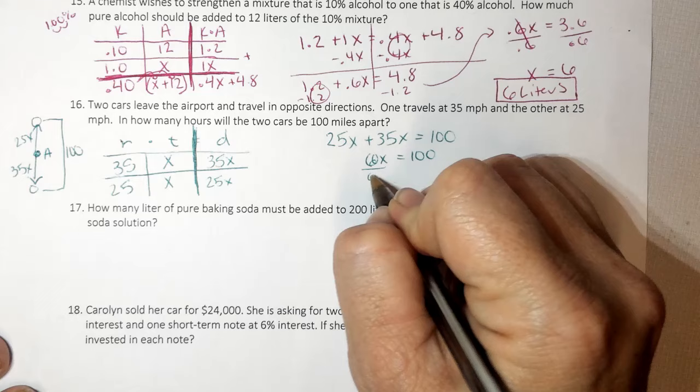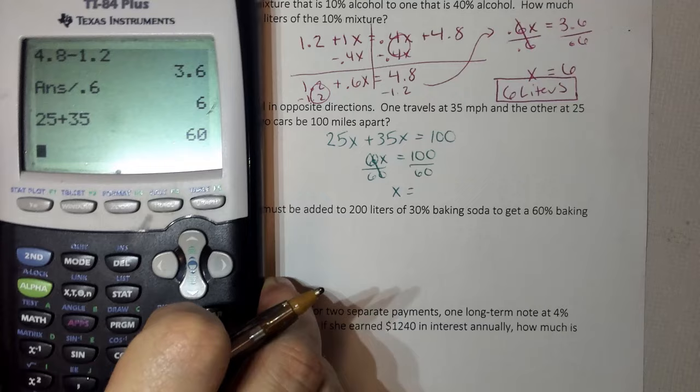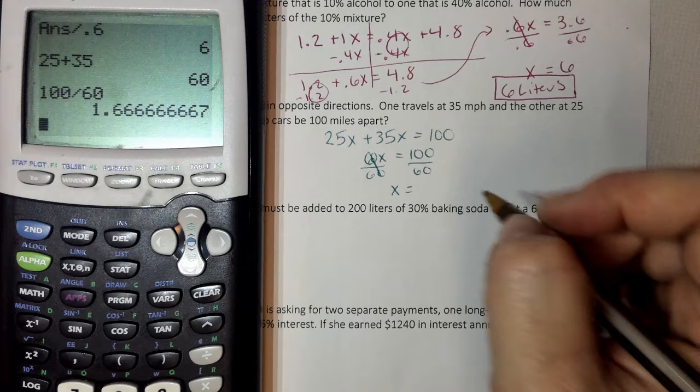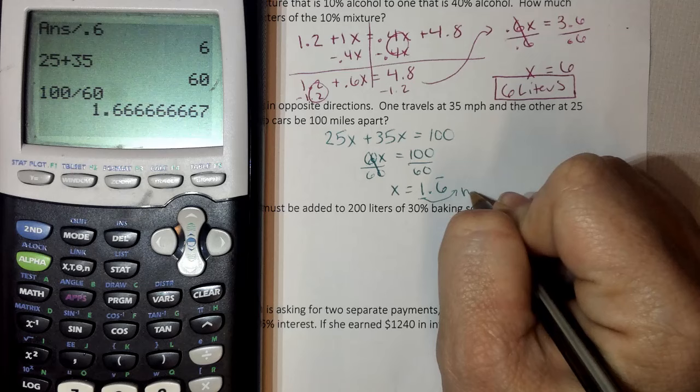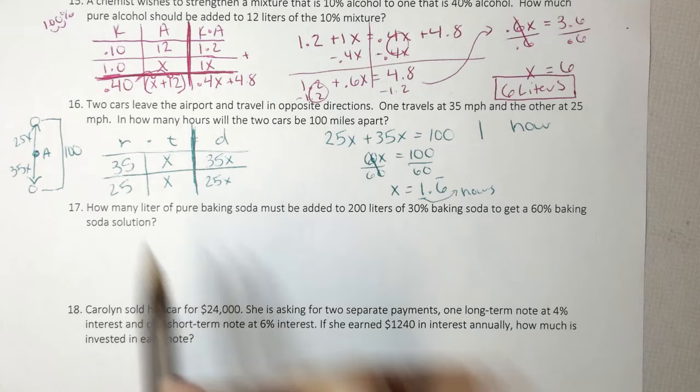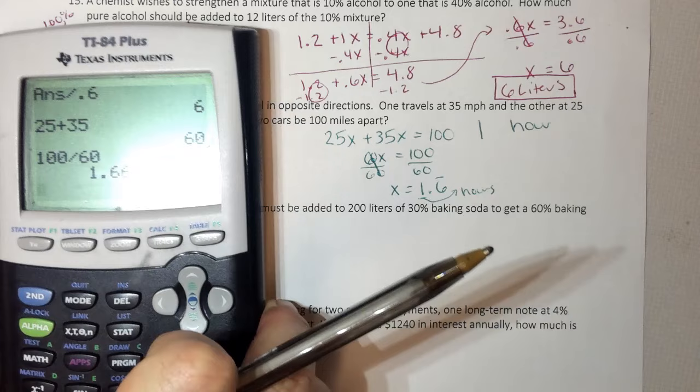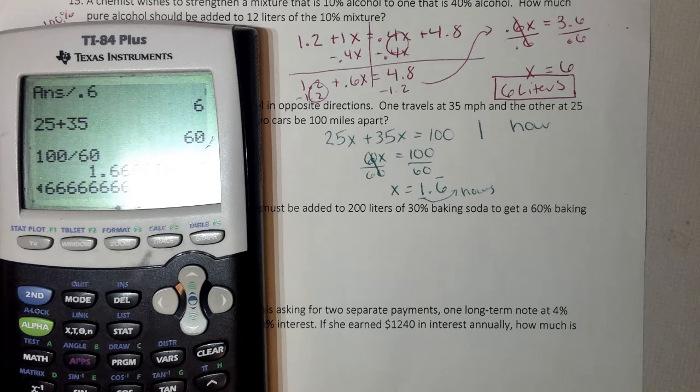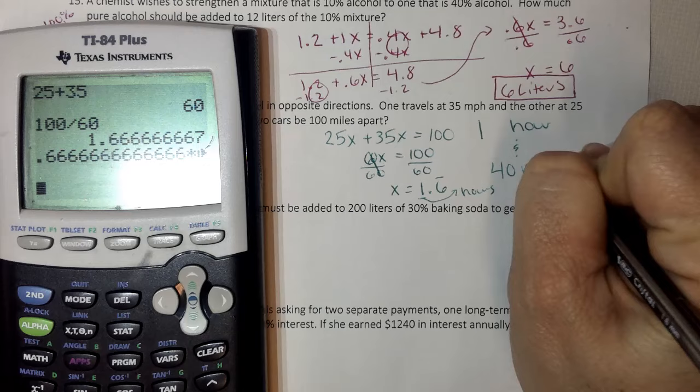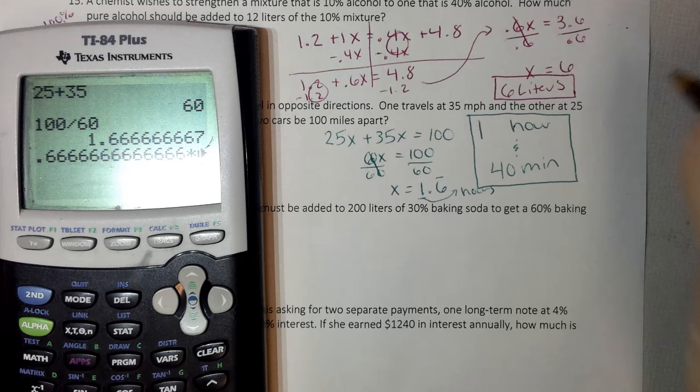And I get x equals 1.6 repeating. So I know that this one represents hours. So I have one hour. Because it says how many hours. So I know I'm talking time. And both of my times are represented by x. And then I know that 0.6 all the way across the screen times my minutes of 60 minutes is 40 minutes. So one hour and 40 minutes. Remember, you multiply your decimal by 60, because there's 60 minutes in an hour to figure out your minutes.